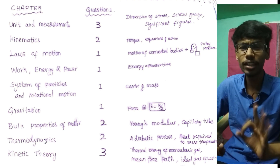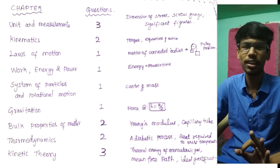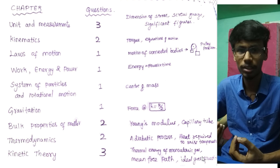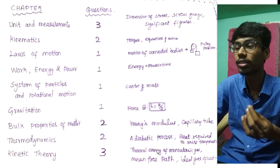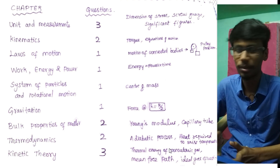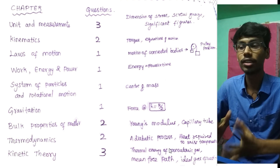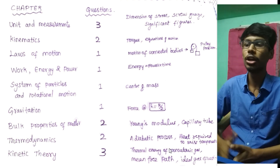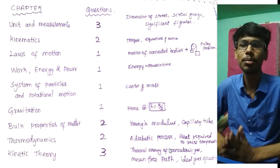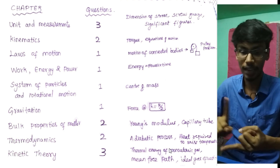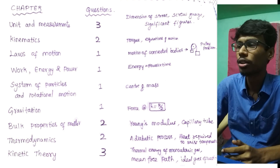Then Kinetic Theory: three questions — two easy questions. Ideal gas equation PV = nRT, the density of the material, then mean free path — there is a formula. Thermal energy of monatomic gas, diatomic gas, triatomic gas — there is a thermal energy value using Boltzmann constant. Just memorize the value — it is a direct application.